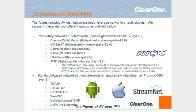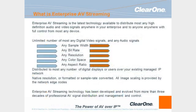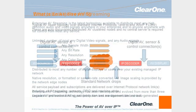In the standards-based group, in order to qualify, you must meet both criteria: you must be able to work on any internet protocol infrastructure, and you must be able to produce AV that can be consumed with or without a decoder or receiver. In the term enterprise streaming, we look at many things: can you have unlimited amounts of inputs to outputs? Can you bring most any type of digital video or audio signals, any sample widths, any bit rates, any resolutions, any color space, any aspect ratios? Those are the main things we look at in an enterprise AV system.